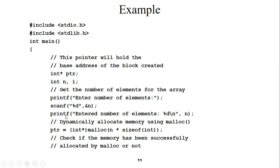The scanf reads the value with %d into n, and in the next line we print the entered number of elements using %d and a newline escape sequence. Now we have the number of elements; the next task is to assign memory to them. We can assign memory with the help of the malloc function — m-a-l-l-o-c. The pointer ptr we declared will be the variable responsible for that memory.